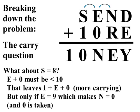So, that leaves us 1 plus E plus 0, because we've got the 1 carried over from the N plus R and E plus 0. But, that would only work, that would only produce carrying if E were equal to 9.